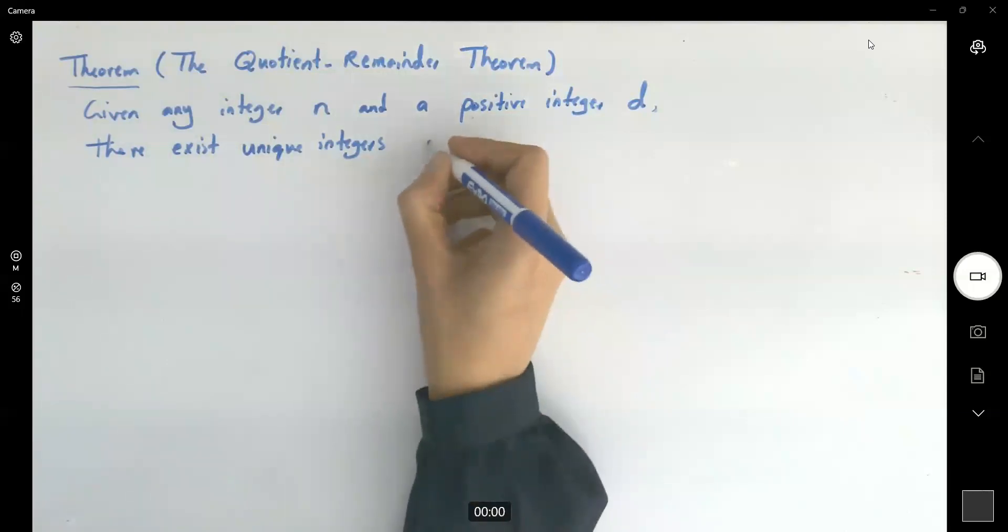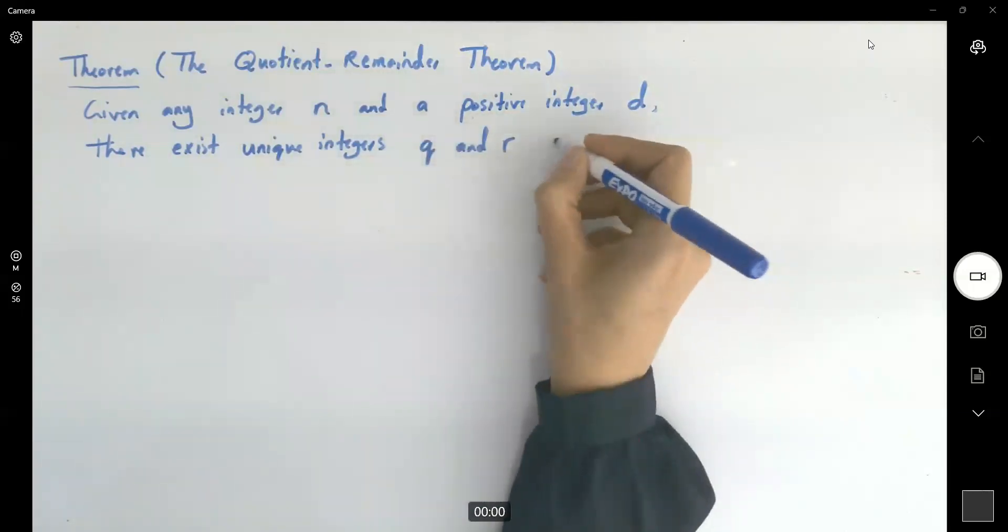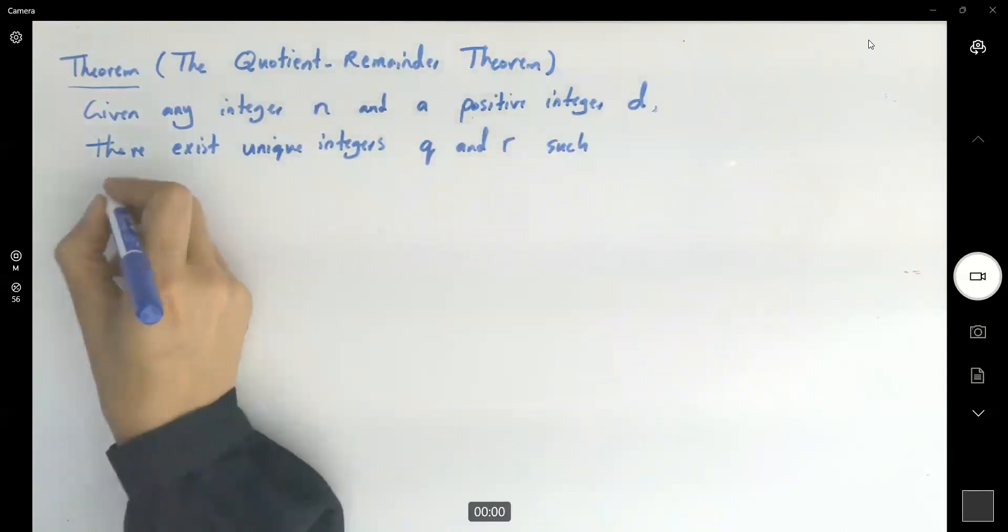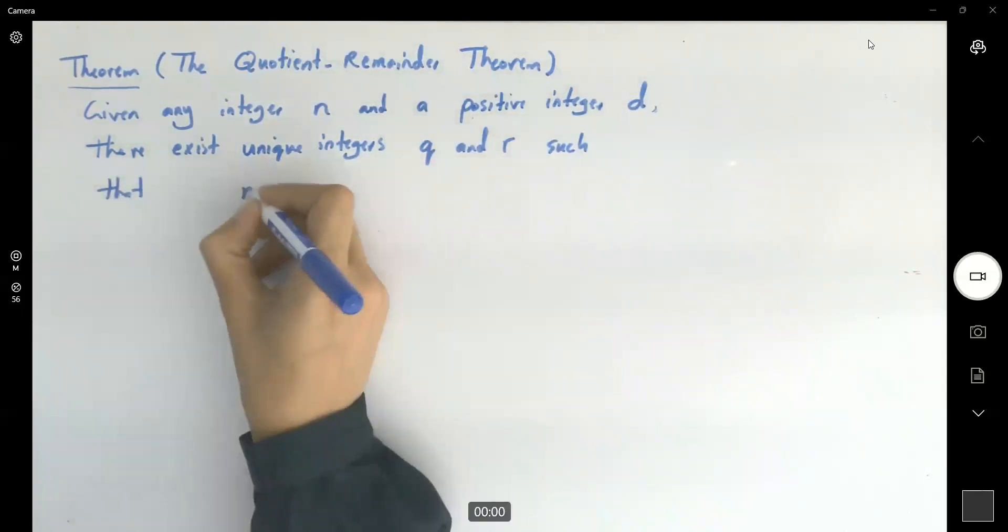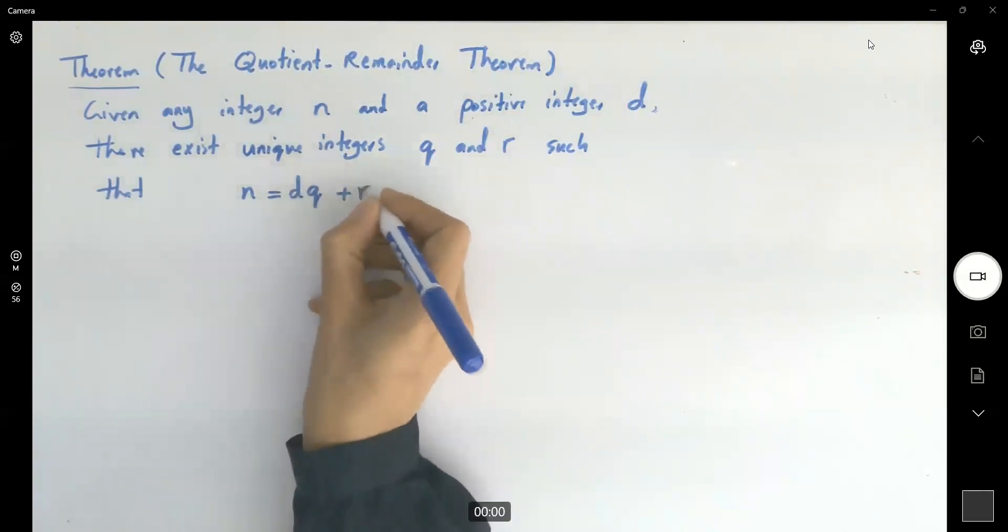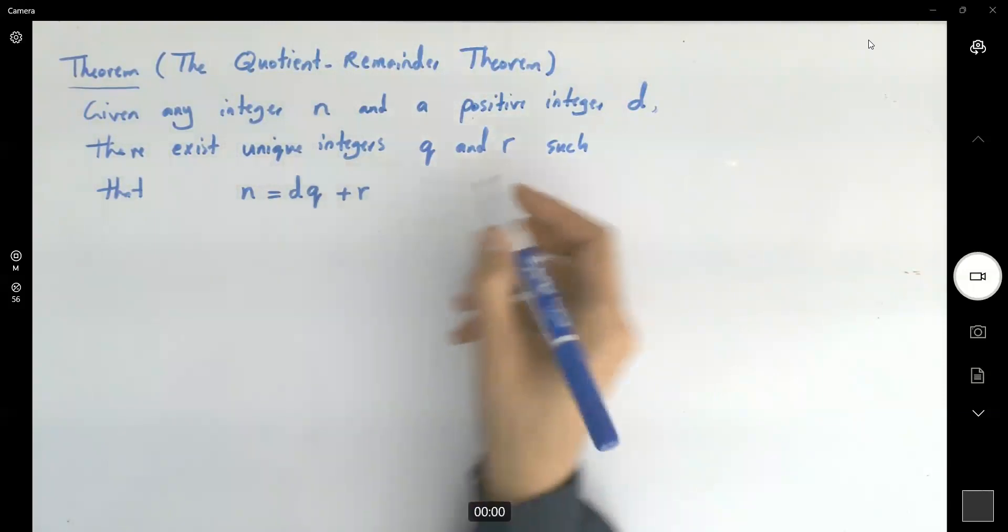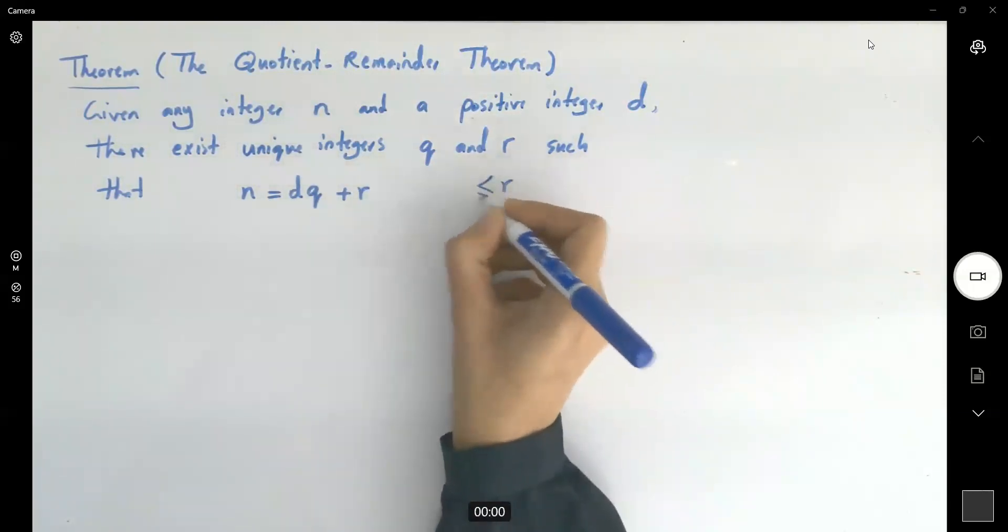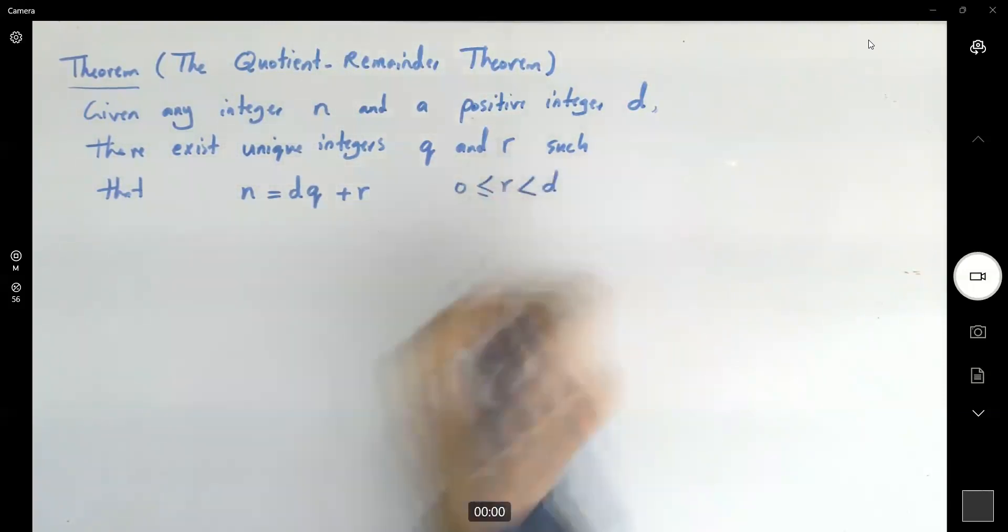Let's call them q and r, such that your n can be written as d times q plus r, or as the remainder is bounded between 0 and d.